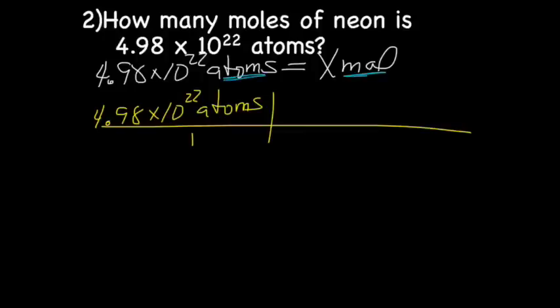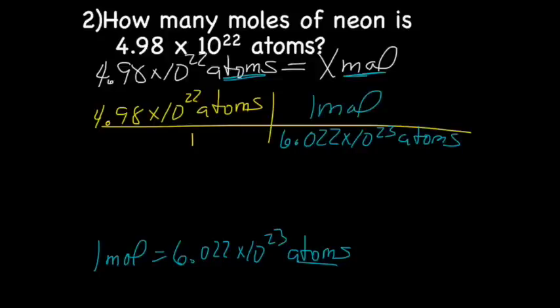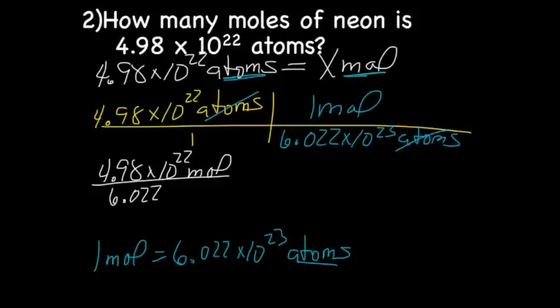And my equality, this time we have atoms and moles, so my equality is same numbers, but different unit. We're going to use 1 mole equals 6.022 times 10 to the 23rd atoms, because we have atoms and atoms. And when I put that in my grid, I'm going to put the atoms on the bottom so it crosses out with the atoms on the top. And we're going to have to multiply across the top and across the bottom, so I'm going to get 4.98 times 10 to the 22nd mole, because atoms is gone now, divided by 6.022 times 10 to the 23rd. And from here I divide.